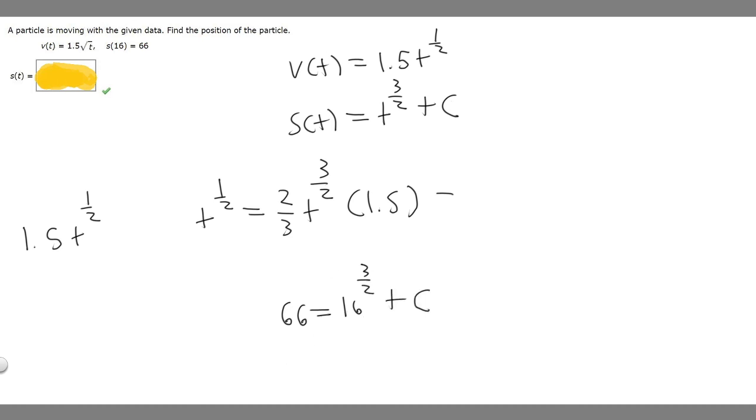So 16 to the 3/2 is going to be equal to 64. So we have 66 equals 64 plus C. Then if we subtract 64 from both sides, we'll get that C equals 2.